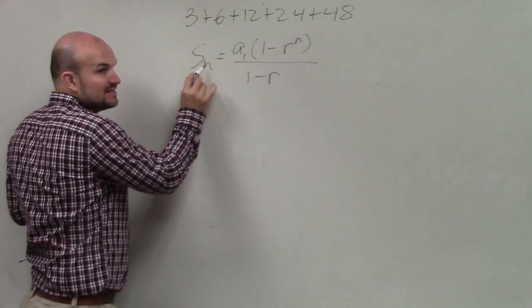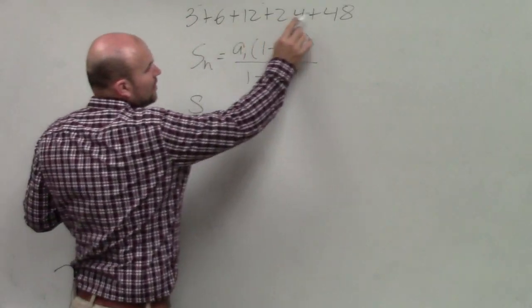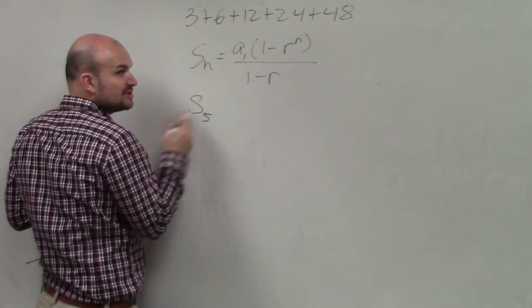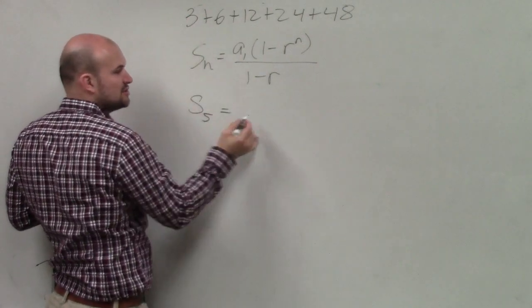So again, when you're trying to find the sum, you're trying to find the sum of how many numbers? Well, 1, 2, 3, 4, 5. So it's S of 5, so the sum of five terms. a sub 1, remember, is the first term, which is 3.